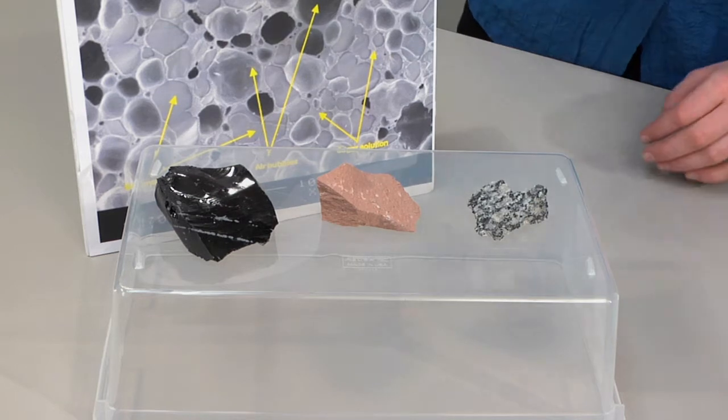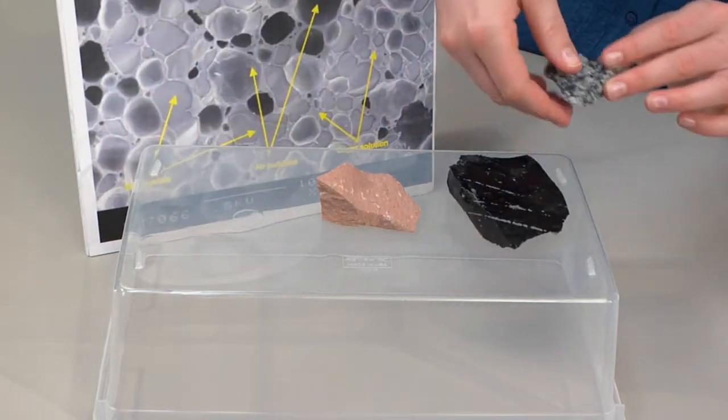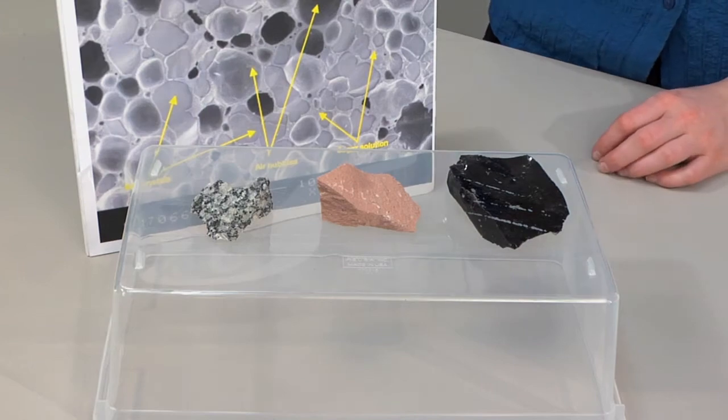Order the igneous rocks by the speed at which they cooled, from slowest to fastest. Record these observations in the student journal.